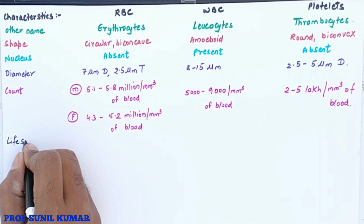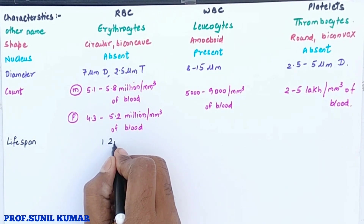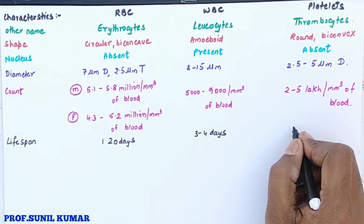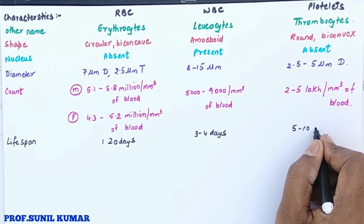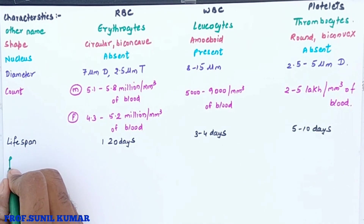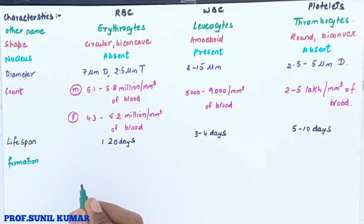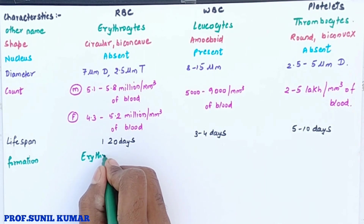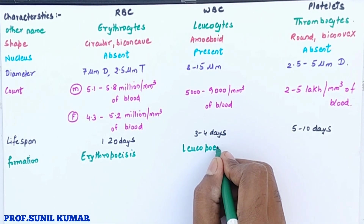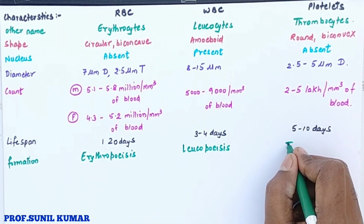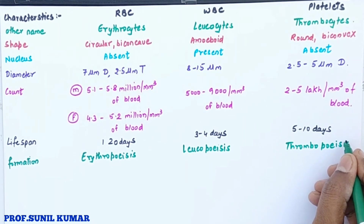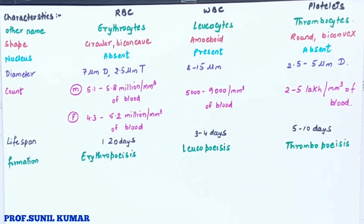The lifespan of RBC is 120 days, WBC is three to four days, and platelets is five to ten days. The process of formation of RBC is called erythropoiesis — 'erythro' means red and 'poiesis' means formation. The formation of WBC is leukopoiesis, and platelets is thrombopoiesis — 'thrombo' means platelets.